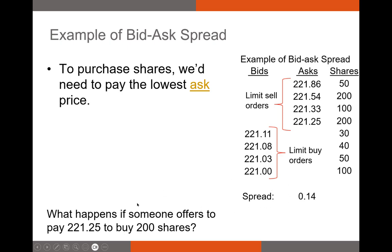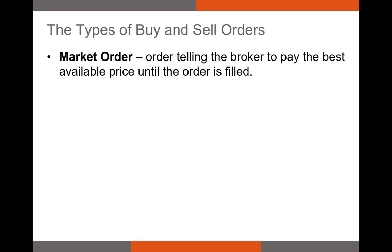What happens if someone offers to pay $221.25 to buy those 200 shares? Well, that outstanding limit sell order will be processed — they'll get to buy those shares for $221.25, and this order will drop out. What we're left with is that the lowest asking price in the market becomes what was previously the second-lowest asking price. So the bid-ask spread actually jumps up — from 14 cents to 22 cents, which is the difference between that new lowest ask and the highest bid that stays the same.